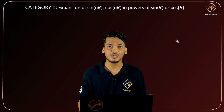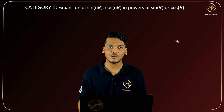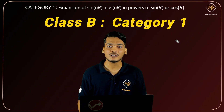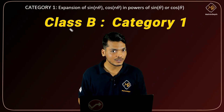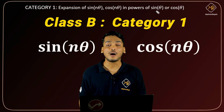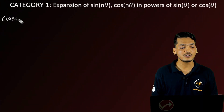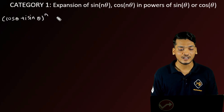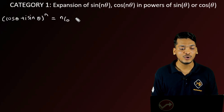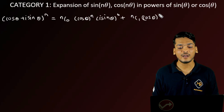Hello friends, welcome to the problem solving video lecture series of complex numbers. In this video lecture and the upcoming video lecture, we will solve problems based on category one. In category one, we will find the expansion of sin(nθ) and cos(nθ) in terms of powers of sinθ or cosθ. We will use the binomial expansion of cosθ + i·sinθ, so (cosθ + i·sinθ)^n can be written as nC0·cos^n(θ)·(i·sinθ)^0 plus nC1·cos^(n-1)(θ)·(i·sinθ)^1...